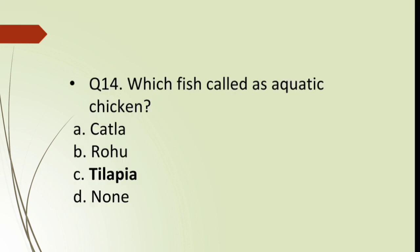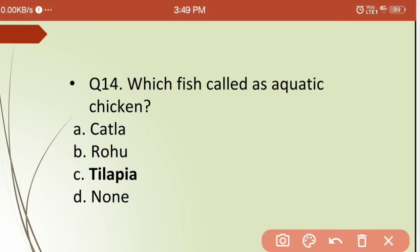Fourteenth question: which fish is called the aquatic chicken? Options are: (a) katla, (b) rohu, (c) tilapia, (d) none of these. The correct answer is tilapia, due to the structure of its muscle.